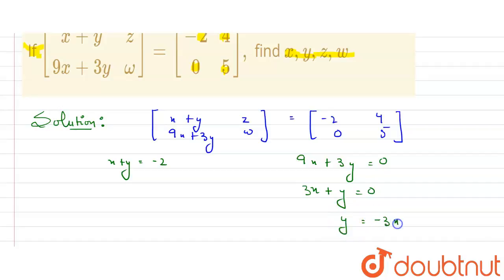So put the value here. In place of y, I will add minus 3x equal to minus 2. x minus 3x will be minus 2x equal to minus 2, so it means that the value of x will be equals to 1. We have got that value of x is 1.